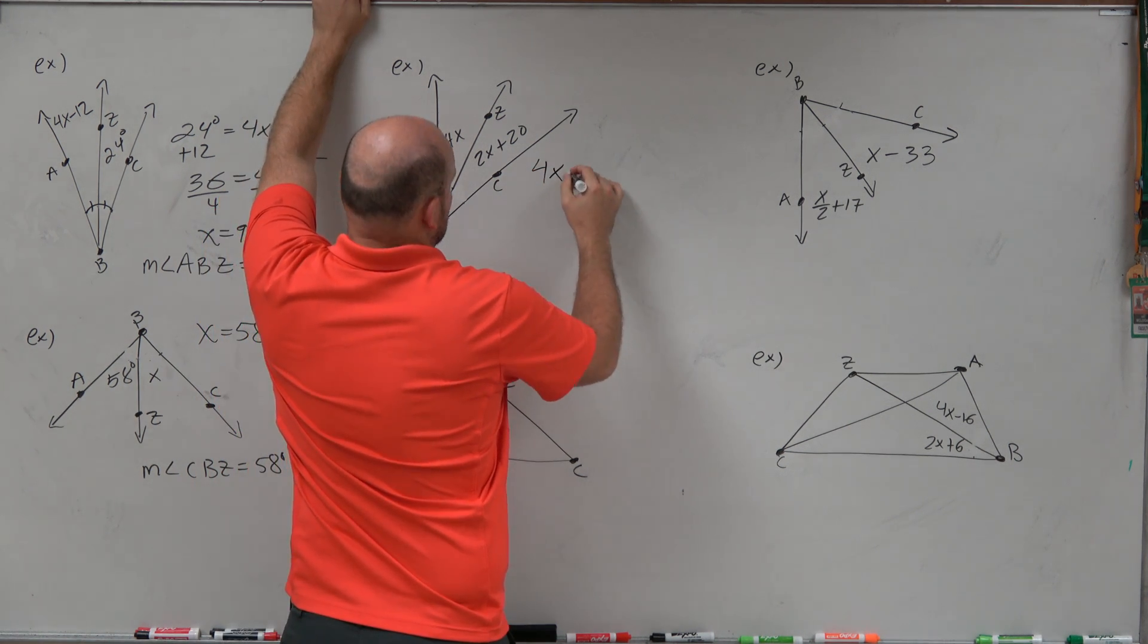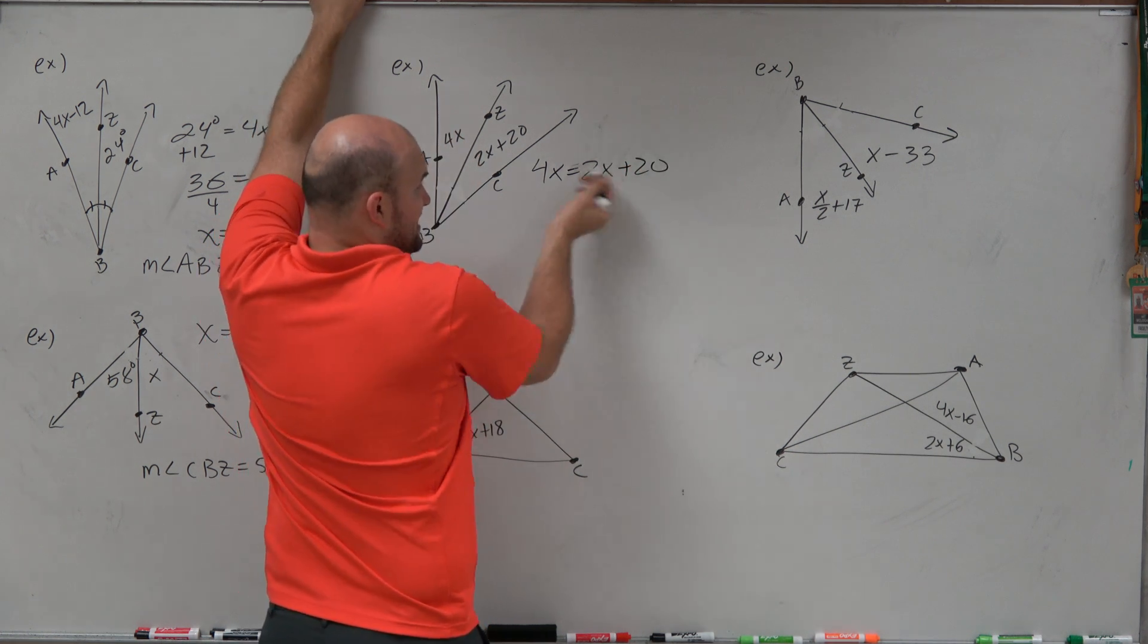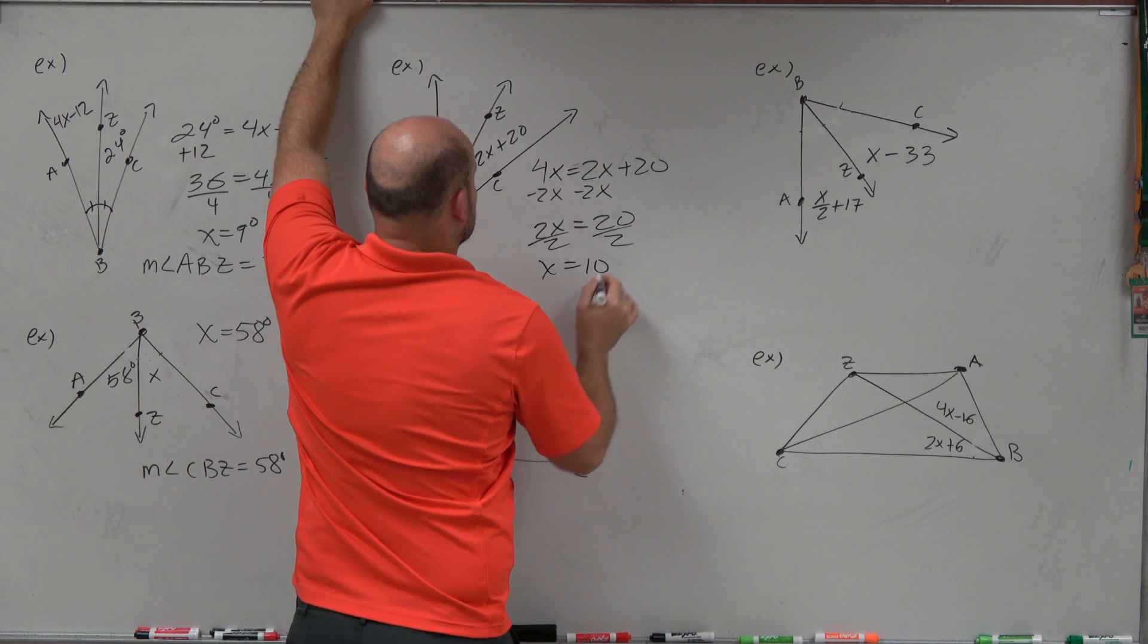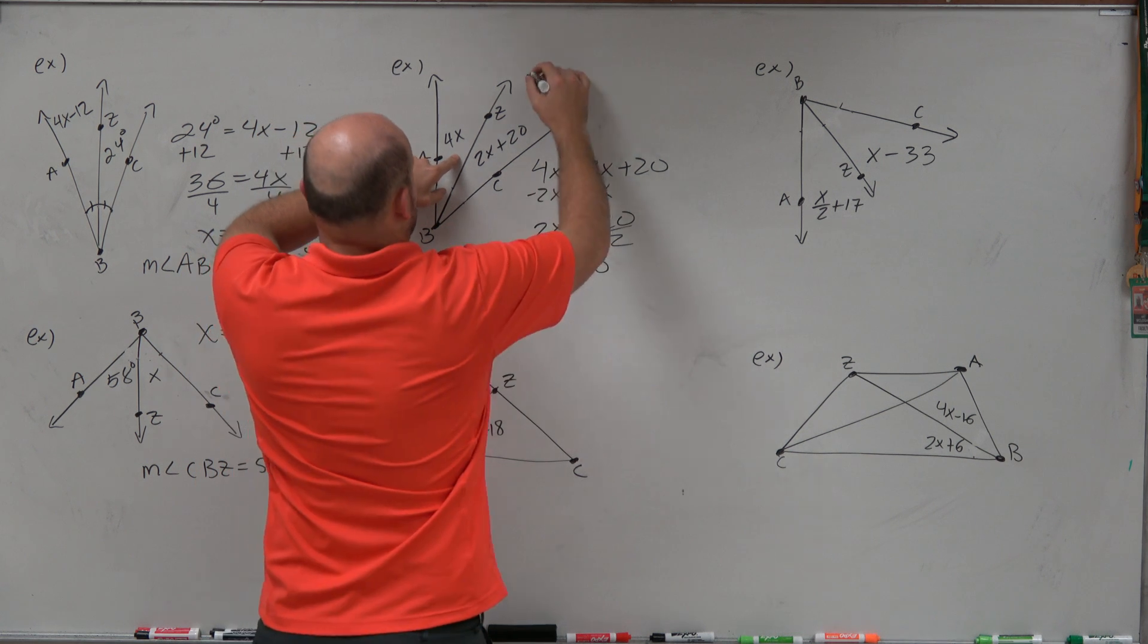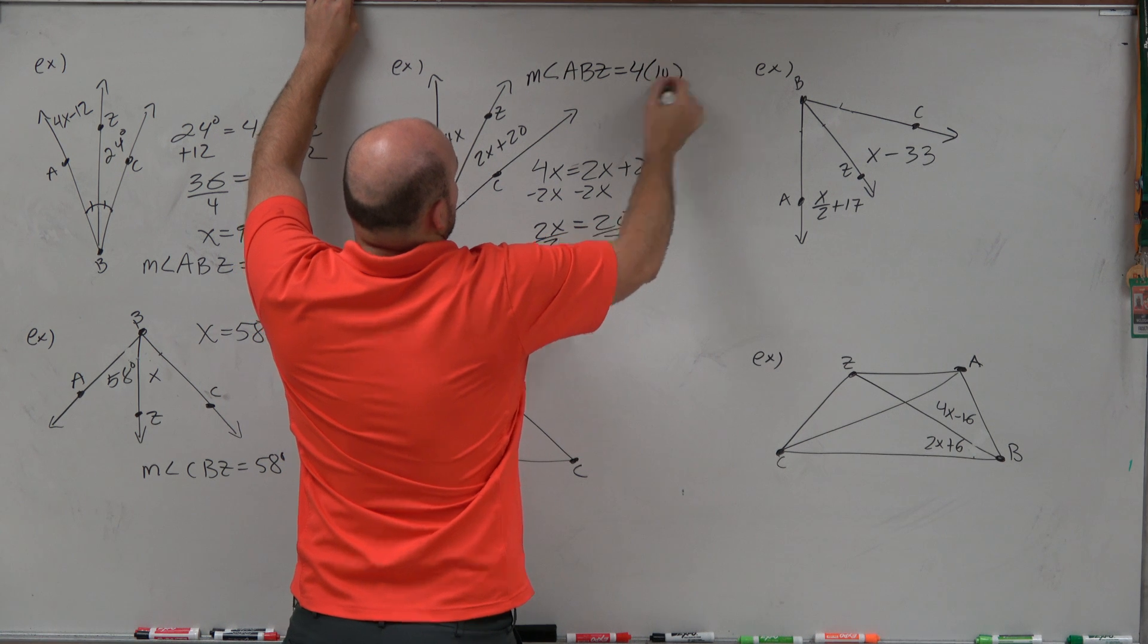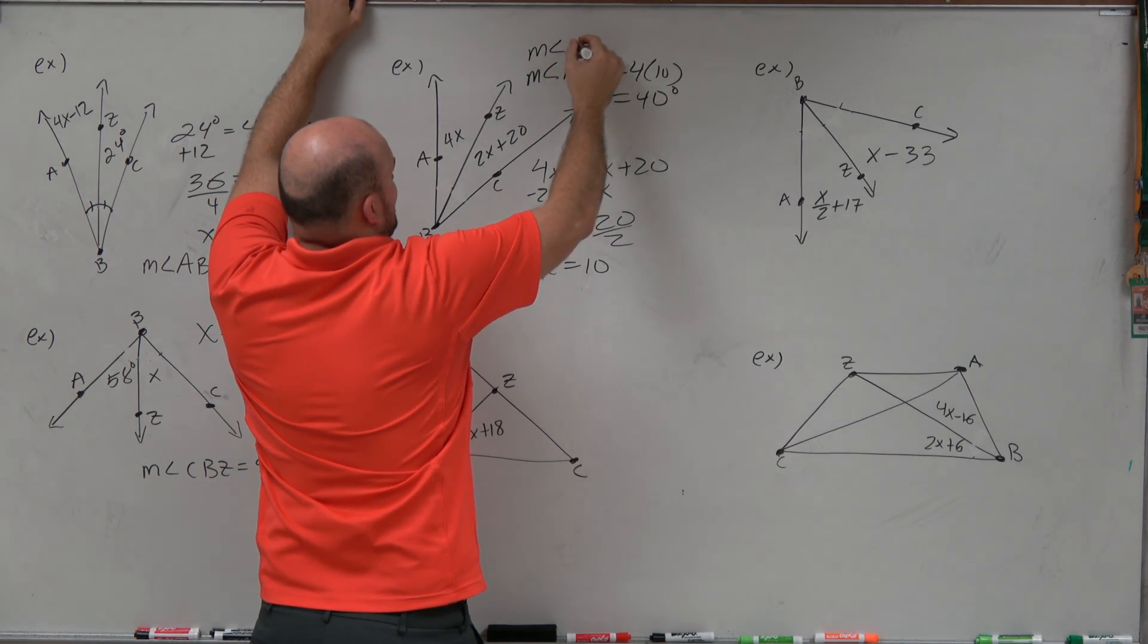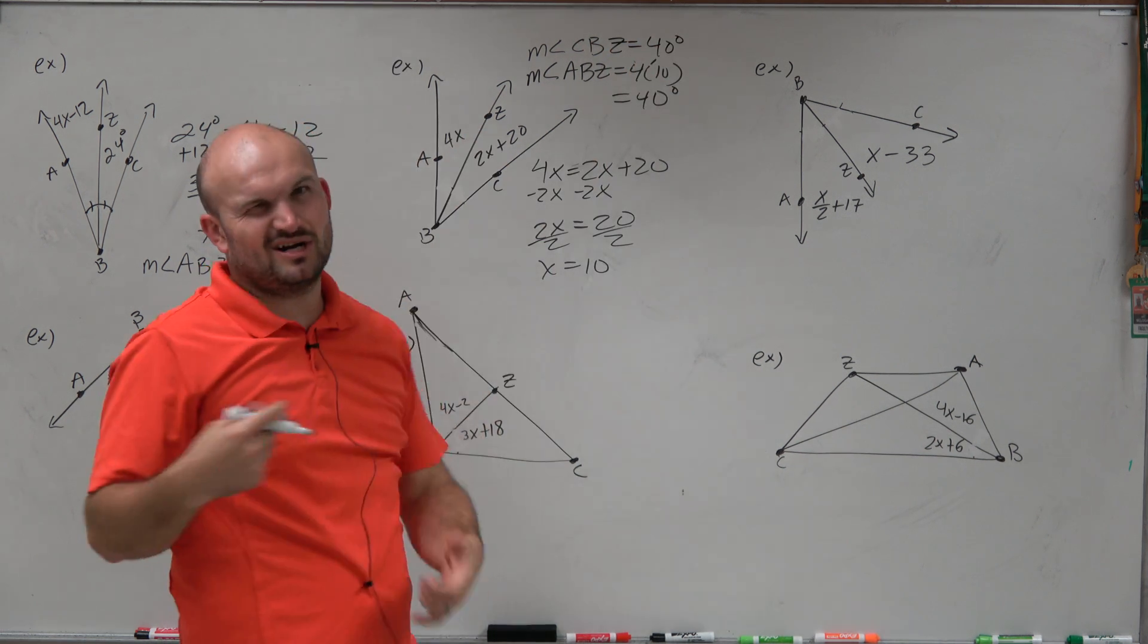In this case, we have 4x is equal to 2x plus 20. So in this case, we're just going to get the x's by themselves. So I'll subtract the 2x on both sides. 2x is going to equal 20, divide by 2, divide by 2. x is equal to 10. Then to go ahead and figure out one out, I might as well figure out this angle. That's not too bad. So I could say that the measure of angle ABZ is equal to 4 times 10, which is equal to 40 degrees. So therefore, if the measure of ABZ is 40 degrees, then that means the measure of angle CBZ is also equal to 40 degrees, right? Because they're always going to be the same.